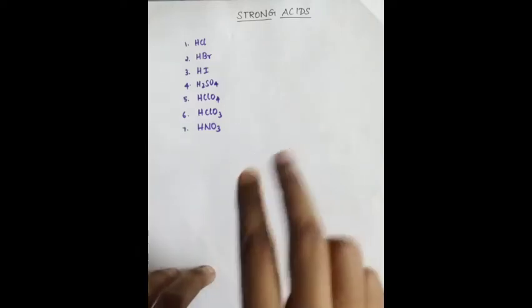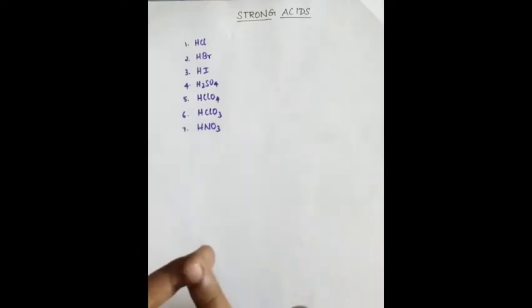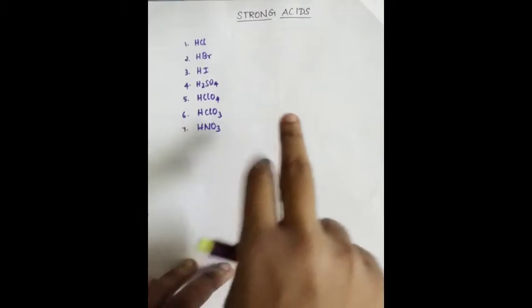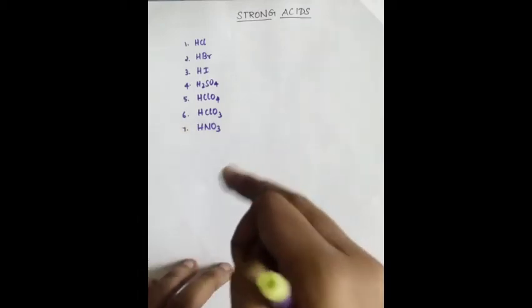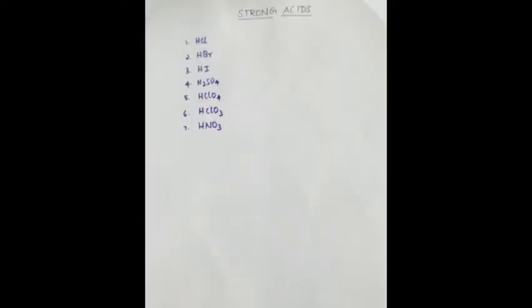If you have any acid that is not in this list — like HF, HIO3, or HCrO4 — it is weak when compared to these 7 acids.